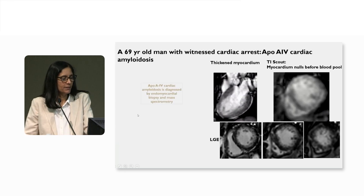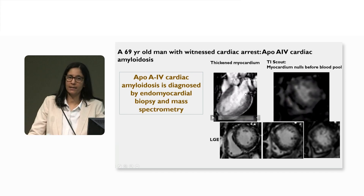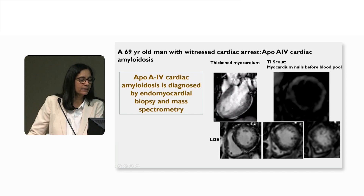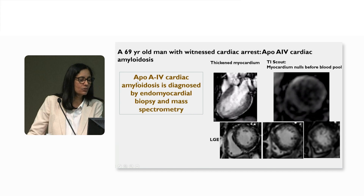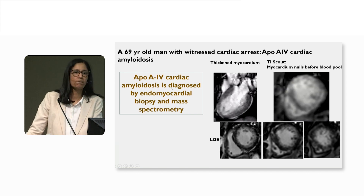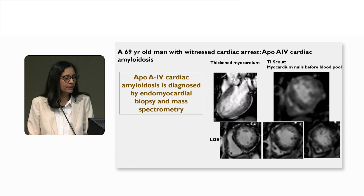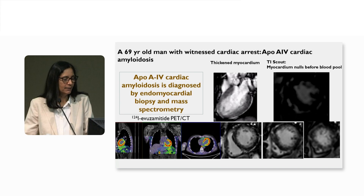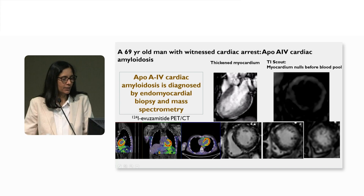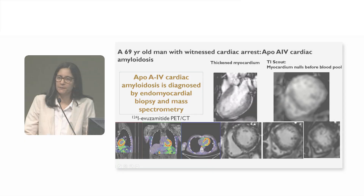This patient came to the Brigham. He had previously undergone biopsy at his hospital, and that was diagnosed as APO A4 cardiac amyloidosis by mass spectrometry. He came to see us with this diagnosis for further treatment and was enrolled in our clinical trial. Here you can see the PET scan showing beautiful images with amyloid in both the left and right ventricles.